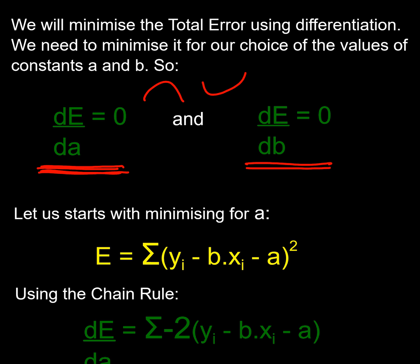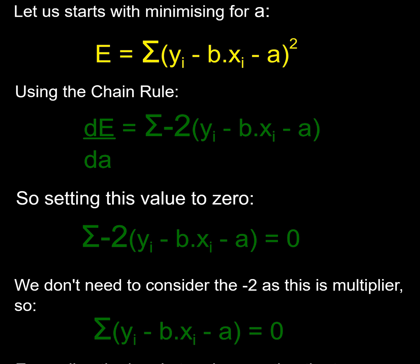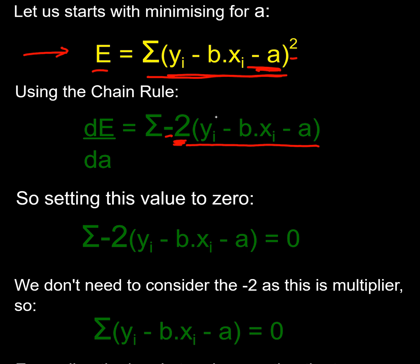Let's start by minimising with respect to a. Here's my equation formula for E. I'm going to differentiate the right-hand side using the chain rule. I've got a bracket that's squared, so I get the bracket to the power of one — bringing down the two from the power — and then I differentiate the inside with respect to a. I've got a negative a term, so when I differentiate with respect to a I just get minus one. I've left the sigma out the front — ignore that for now.